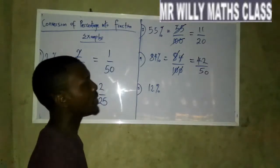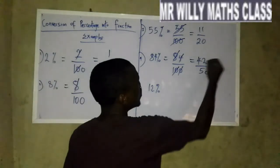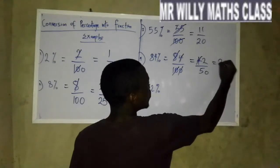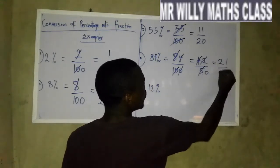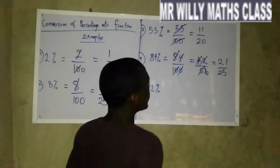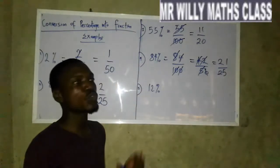Now if you look at 42 and 50, 2 can still divide it. 2 into 42 is 21 and 2 into 50 is 25. So 84% is the same thing as 21 over 25 as a fraction.